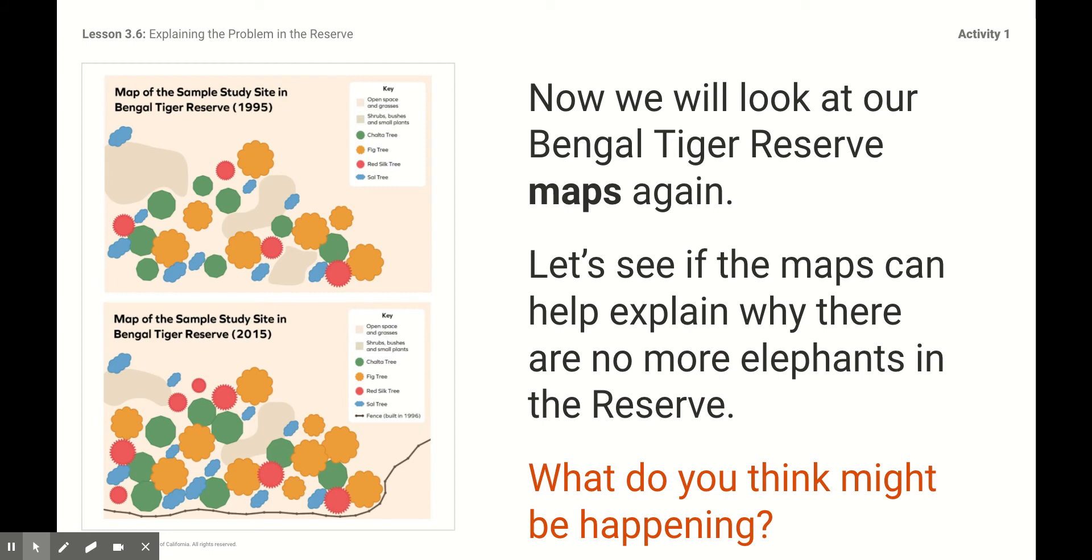Remember these maps that we studied a few lessons ago? We started to look at all of the chalta trees and the fig trees and the red silk trees and the salt trees in 1995. And then we noticed that there was a few more growing within 2015. If you think about it, if all of these trees and bushes are growing and no one is eating from them, and there's a lot of them, but there's no one there to eat from the trees, why do you think that's happening?